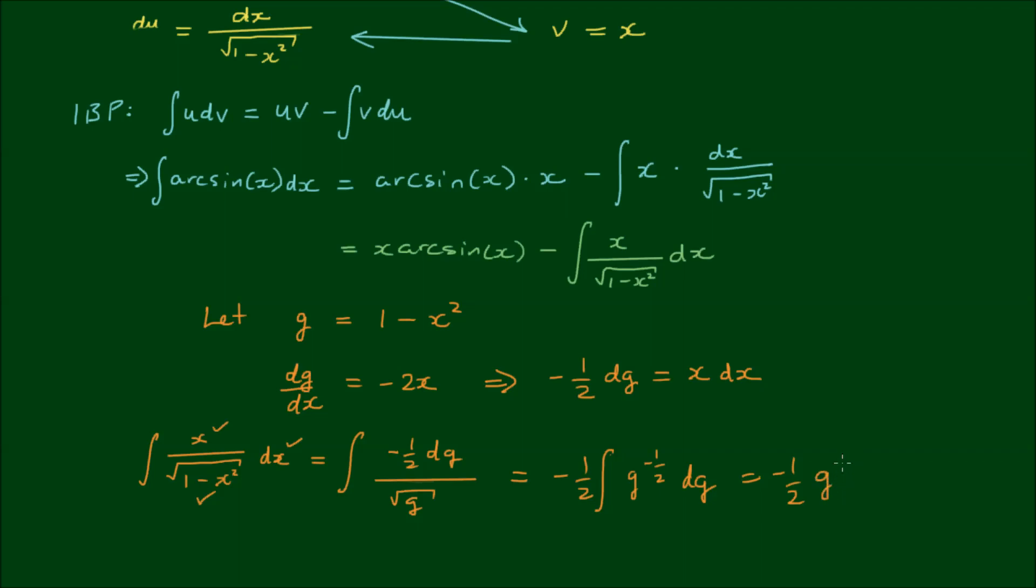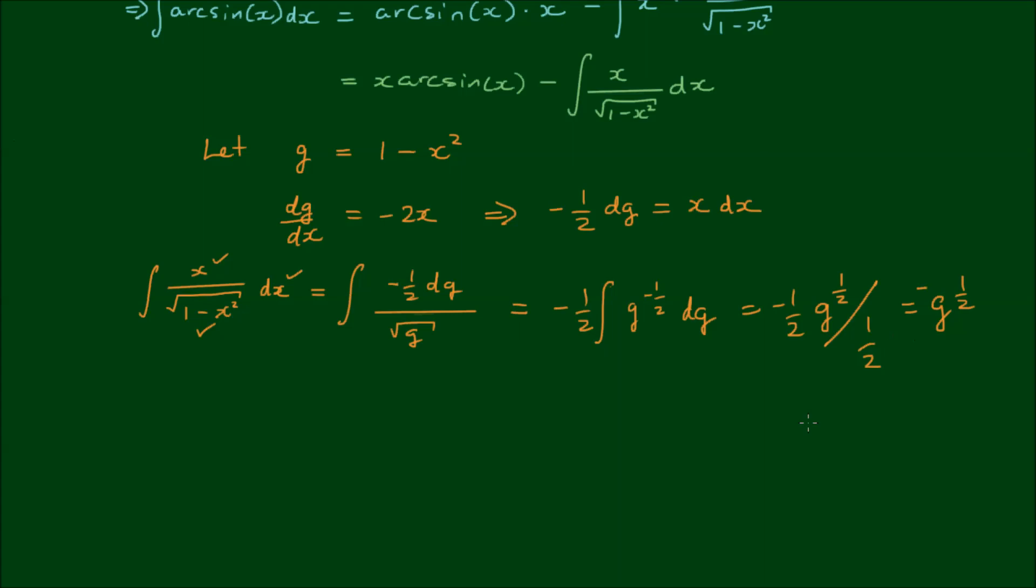So the constant half remains. And the integral of g to the negative 1 half, we add 1 to the index, which brings it to positive 1 half, and divide by the new power, which is 1 half. So it equals negative g to the half, with the half and the half cancelling out. And that equals then the negative of 1 minus x squared to the power of 1 half, which simply equals negative of the square root of 1 minus x squared.